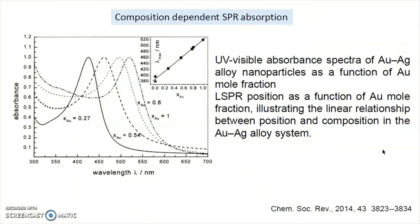Now let us see what is composition-dependent SPR absorption. Up to now we have been looking at only one type of metal — either gold or silver. But suppose if you are making an alloy of gold and silver, what will happen? For pure gold, the absorption spectra maximum is in the range of 525 nanometers.